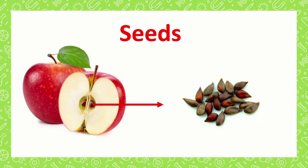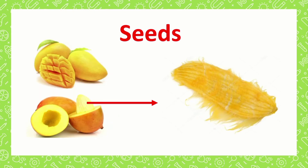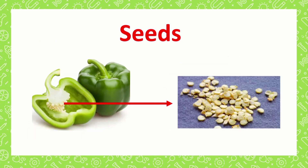Next, let's see how fruits and vegetables grow. Inside every fruit and vegetable there are seeds. You can find seeds inside any fruit or vegetable, like the seeds we find in apples — they are small and brown. They're called seeds. We can also find seeds in a mango and they can be big and yellow. Or we can find seeds in pepper — they're small and white and called seeds.